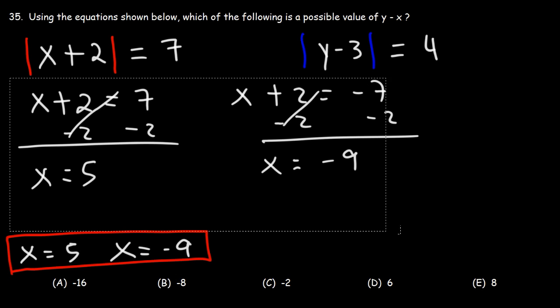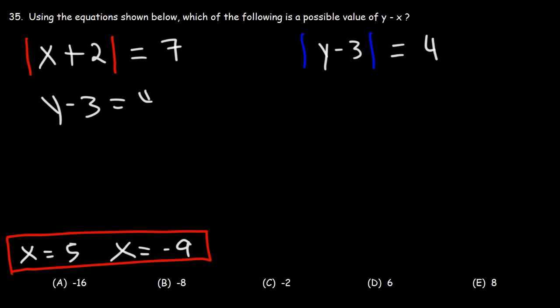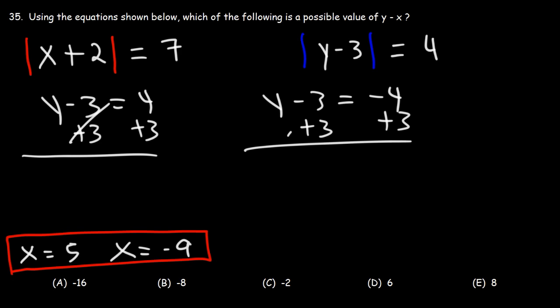Let's calculate the possible values of y. So we have y minus 3 is equal to 4, and y minus 3 is equal to negative 4. So let's add 3 to both sides. 4 plus 3 is 7. Negative 4 plus 3 is negative 1. So the possible answers for y are 7 and minus 1.